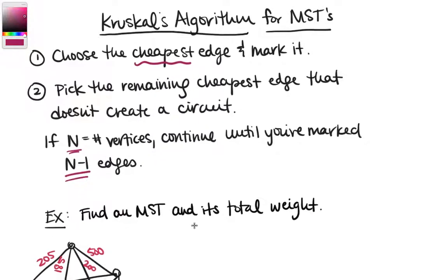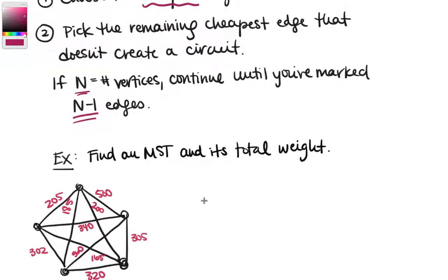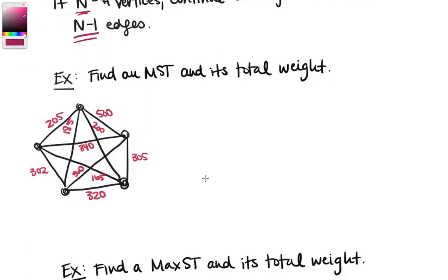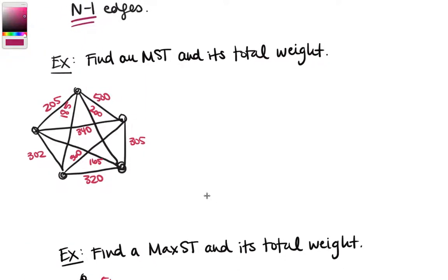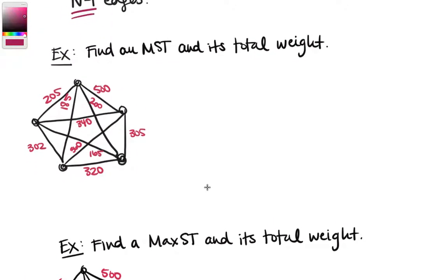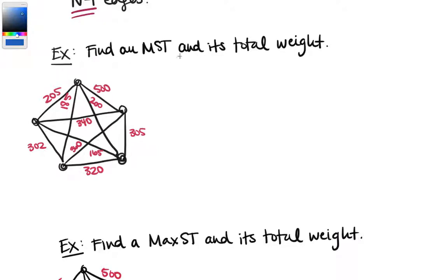It's easier to see this marked out in an example, so let's go ahead and work on one together. We want to find a minimal spanning tree and its total weight. We've got several weights here.